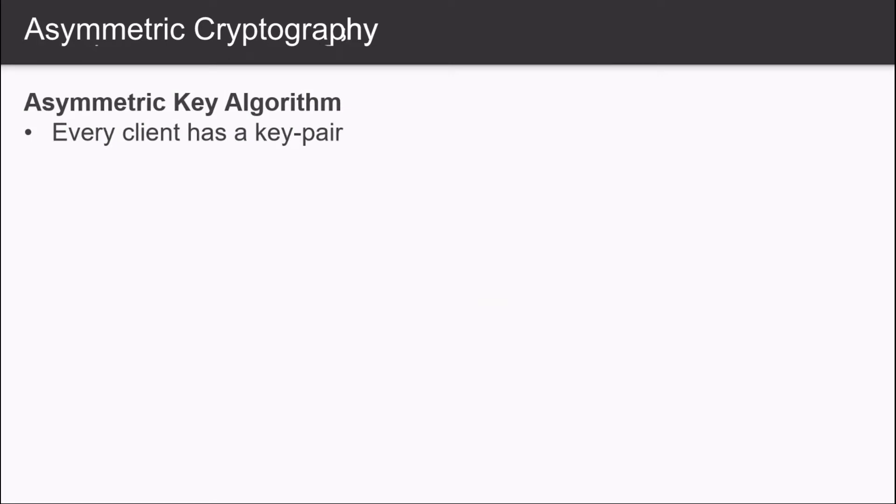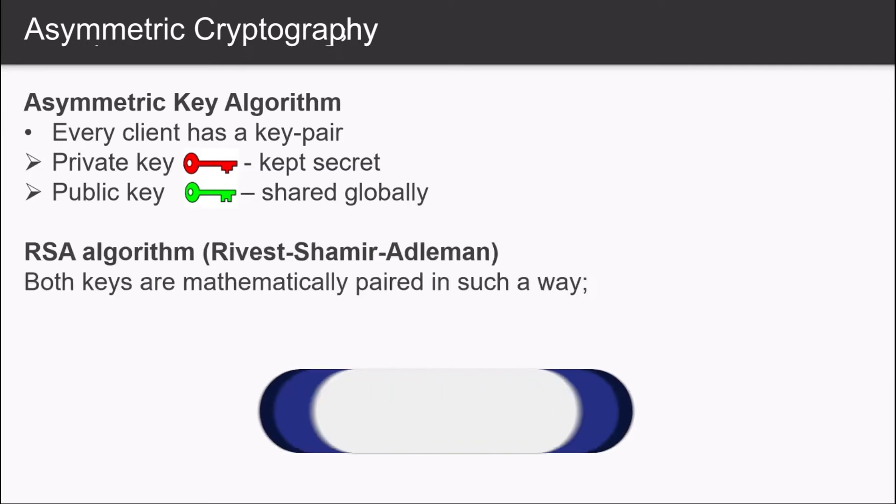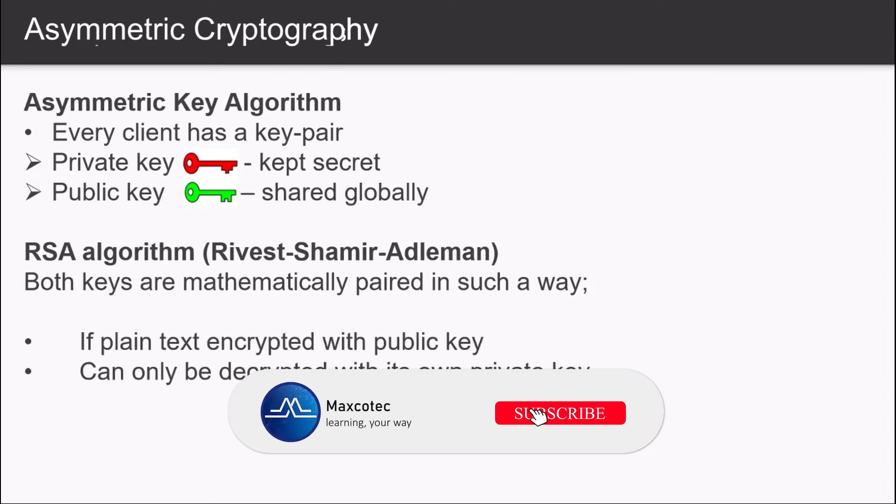Which brings us to asymmetric key algorithm, where we have a key pair for each client: the private key and the public key. Private key, as the name says, is always kept private from everyone, even from the server as well. And the public key has to be globally published to be visible to everyone, so it is shared with everyone. The most popular asymmetric key algorithm is known as RSA.